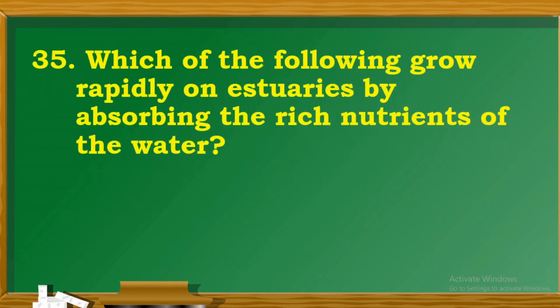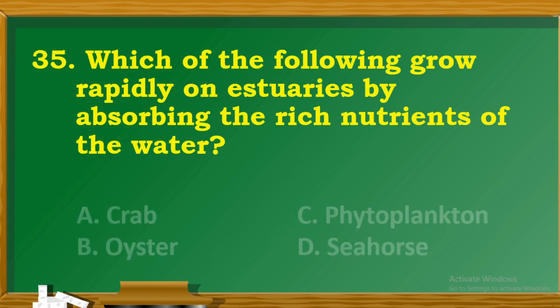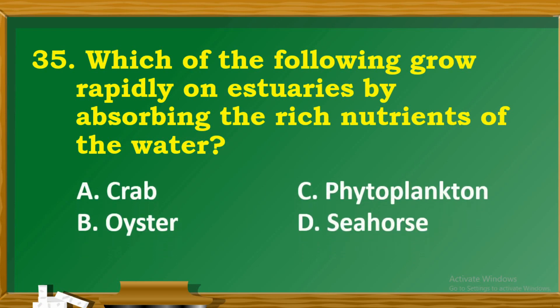Question 35: Which of the following grow rapidly on estuaries by absorbing the rich nutrients of the water? A. Crab. B. Oyster. C. Phytoplankton. D. Seahorse.